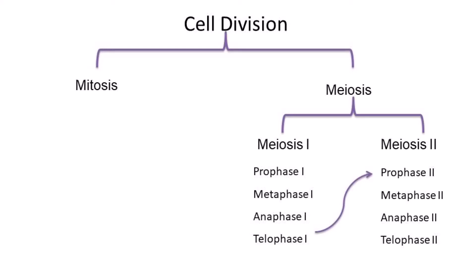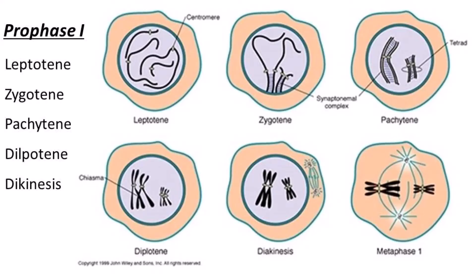Meiosis takes place in two stages: meiosis first and meiosis second. In meiosis first there are four stages — prophase, metaphase, anaphase, and telophase — denoted as prophase first, metaphase first, anaphase first, and telophase first. Prophase first contains five stages, and these five stages depend on the activity of the chromosome. Prophase first of meiosis is actually a much longer phase of meiosis.